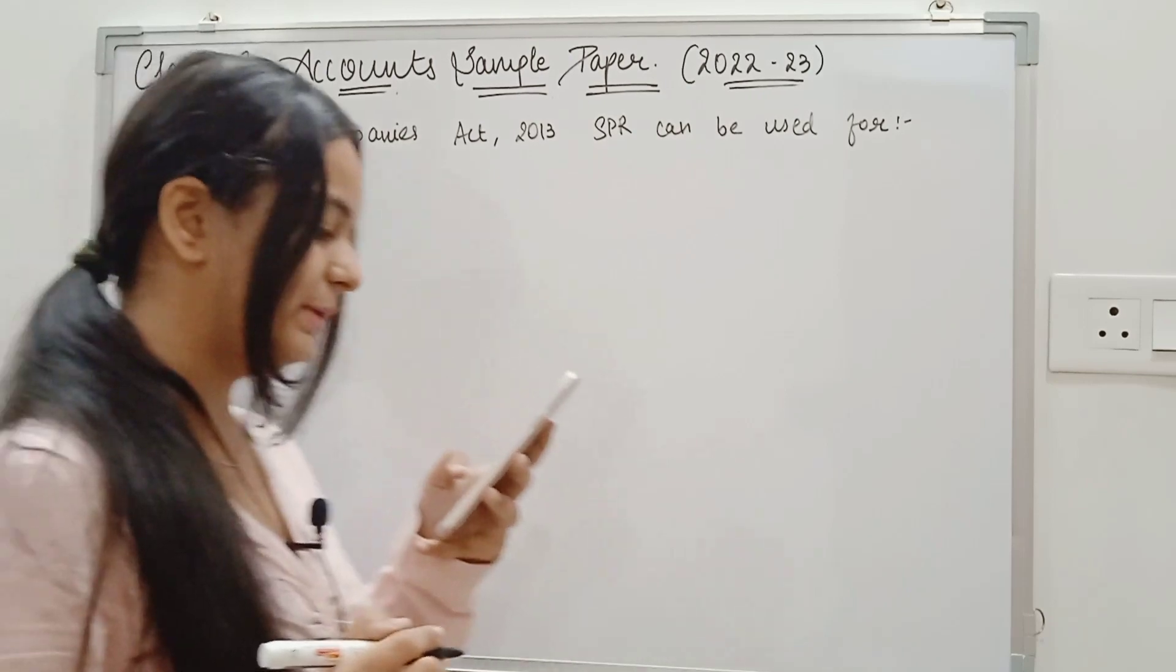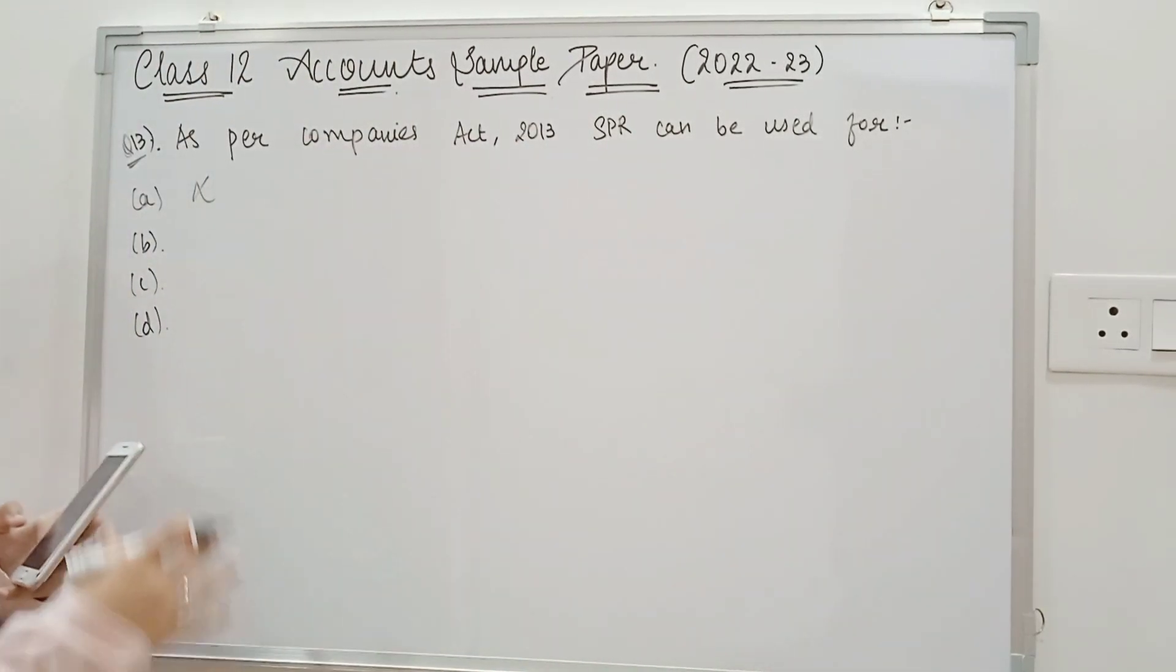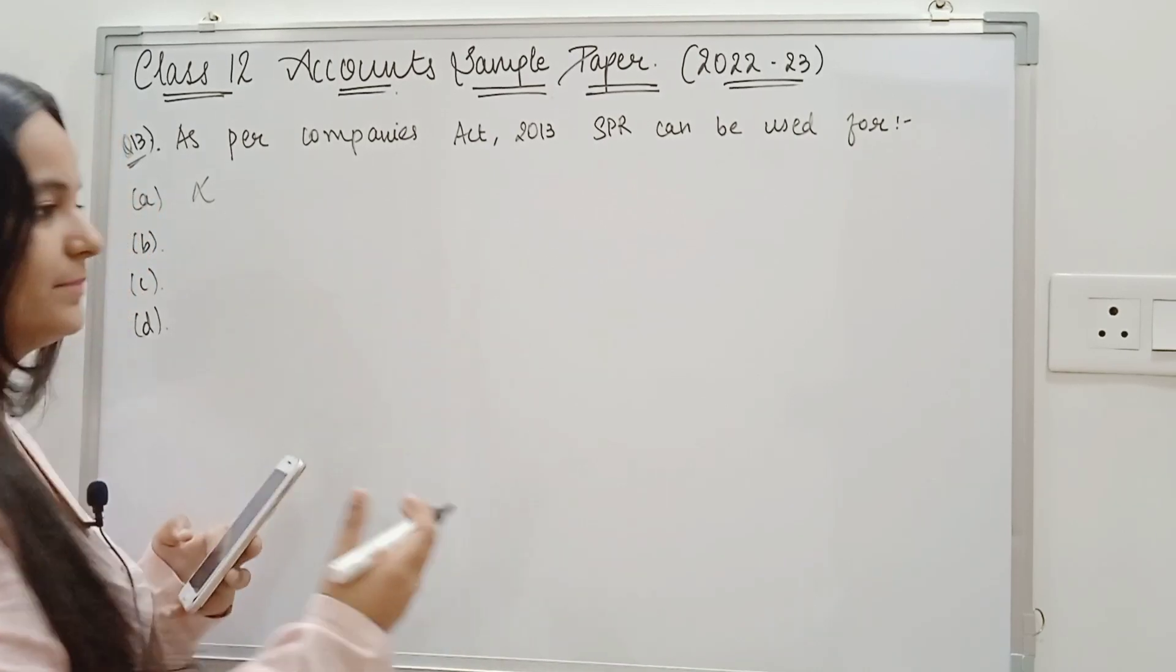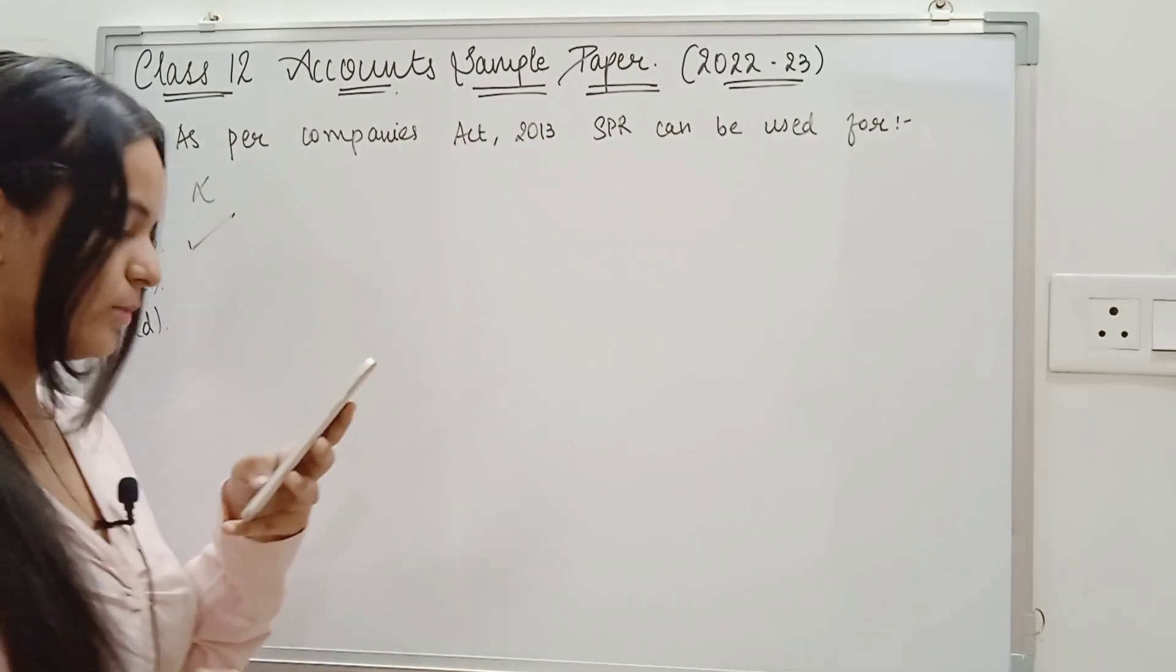Second option is providing for premium payable on the redemption of debentures. When we redeem debentures, if we give premium for that, we can use SPR. So option B is the right option.